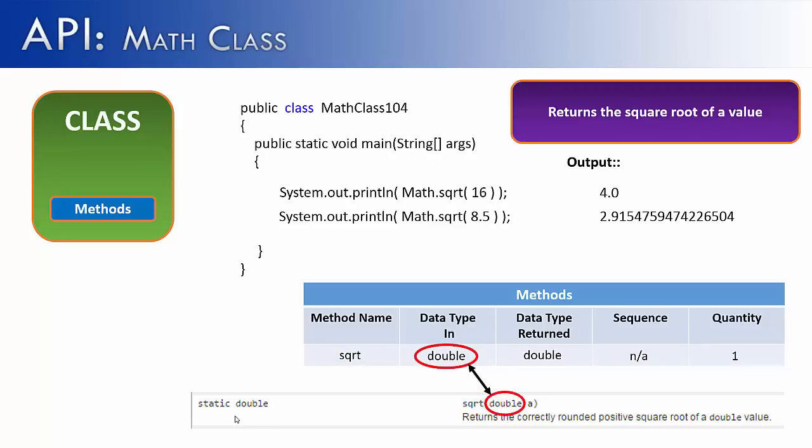Next, we have the data type in. It says, hey, if you're going to use it, it has to take in a double. You could take in an int, but it will convert it into a double. It says, what is returned? It is going to be a double. What is its sequence? Well, it doesn't have a sequence because it only has one value coming into it. It would have to have more than one value for it to have a sequence.